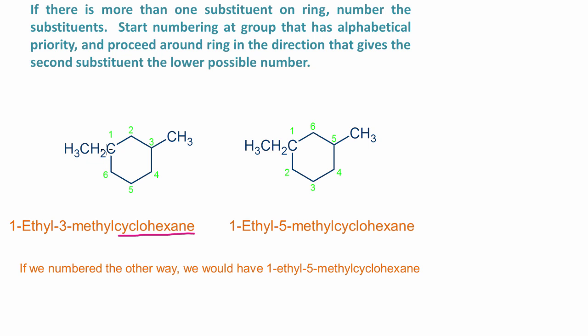In this case we have a cyclohexane with an ethyl group on carbon number one. We make that carbon one because ethyl has alphabetical priority. If I number this way - one, two, three, four, and so on - the ethyl group is on carbon one and the methyl group is on carbon three. So I would name this 1-ethyl-3-methylcyclohexane.